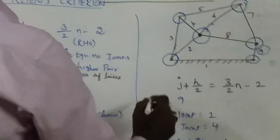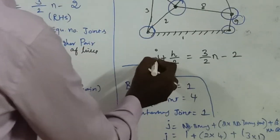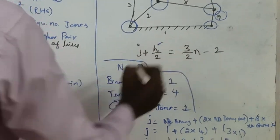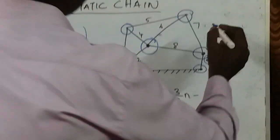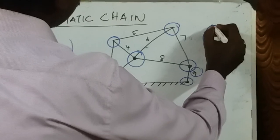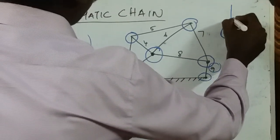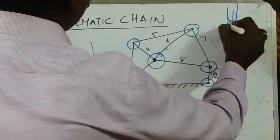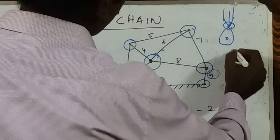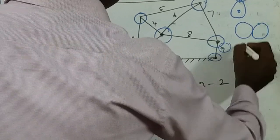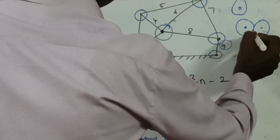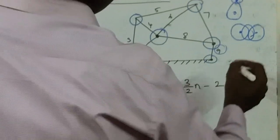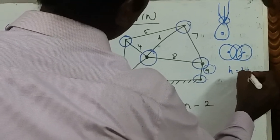The formula for Aw Cline's criterion is J plus H divided by 2 equal to 3 by 2 into N minus 2. Here H means higher pair. A higher pair means point or line contact — for example, a cam and follower is a point contact, and two gears meshing with each other have line contact. Both types are called higher pairs.